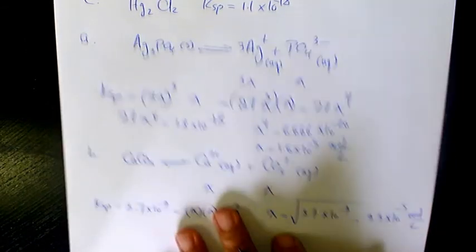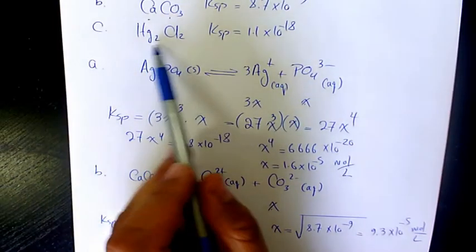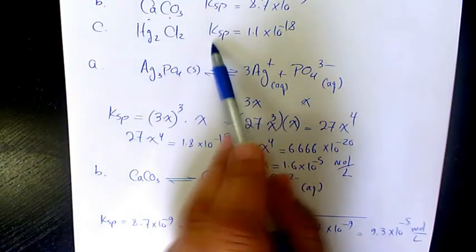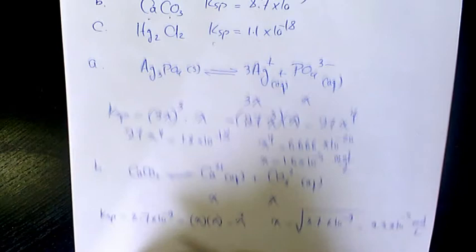Now let's do Part C, which is HG2Cl2. KSP is 1.1 times 10 to the power of negative 18.